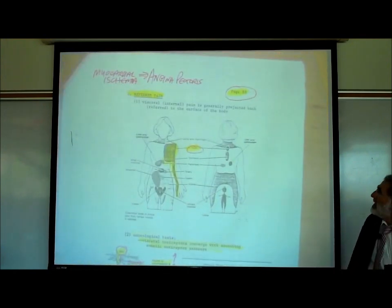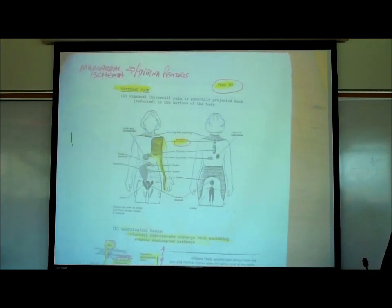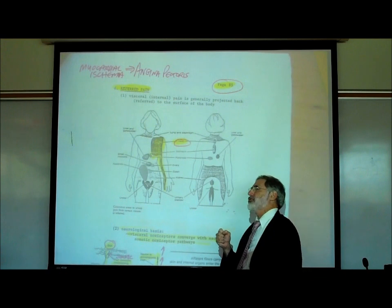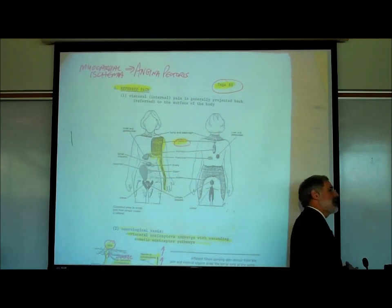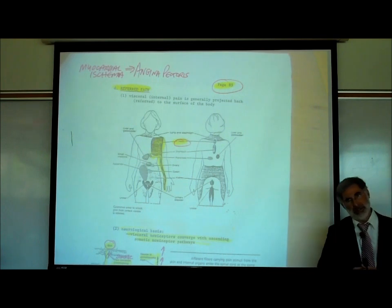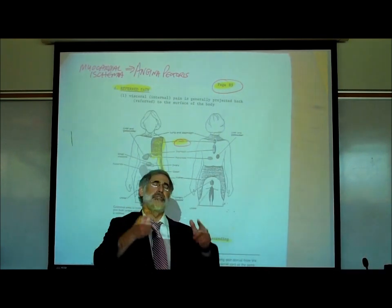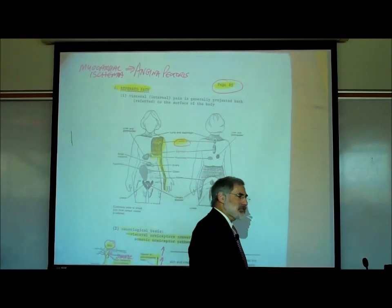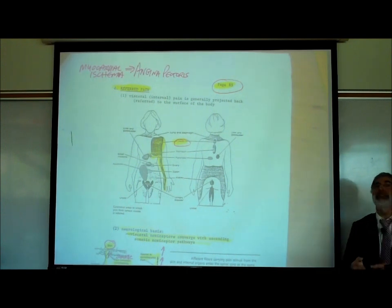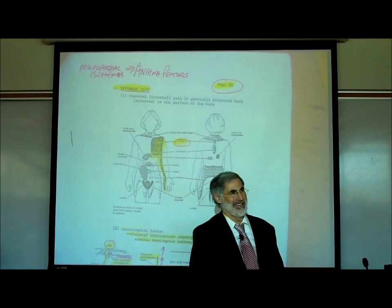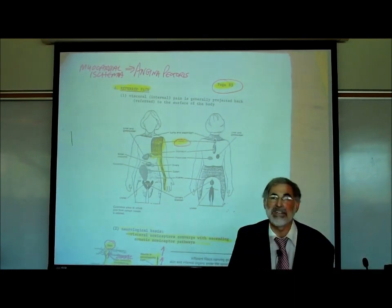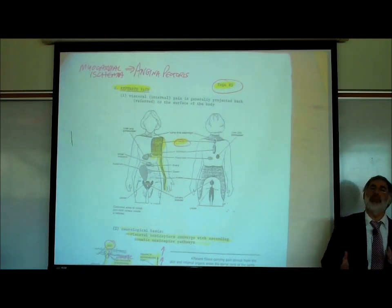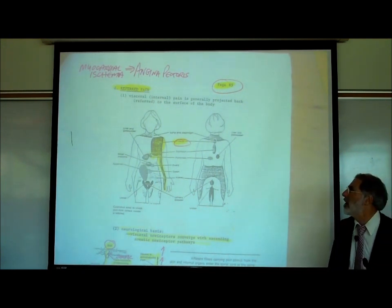On page 85, the last thing about pain is referred pain. There's a significant difference between pain coming from the surface of the body — skin or skeletal muscles — and pain coming from an internal organ. If we blindfolded you and put a pin in one of your fingers, you'd know exactly which finger. But when you have injury to an internal organ, it's hard to know exactly which organ it is — that's called referred pain.